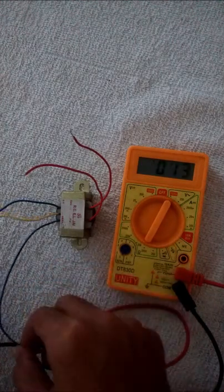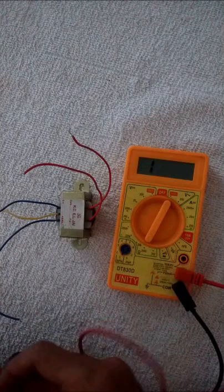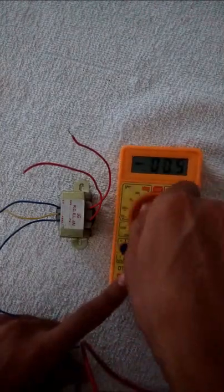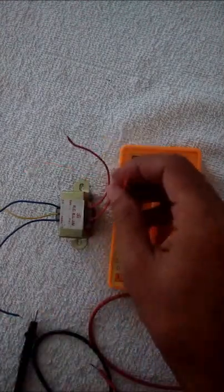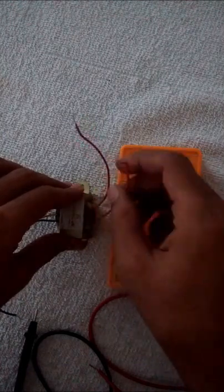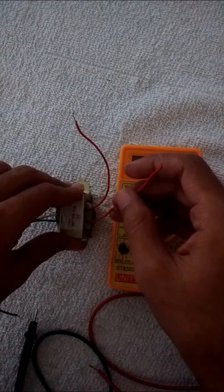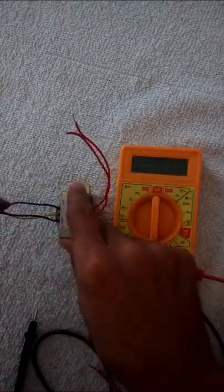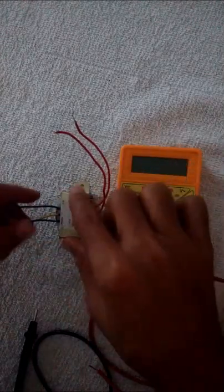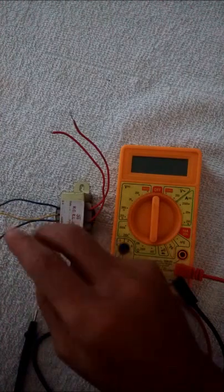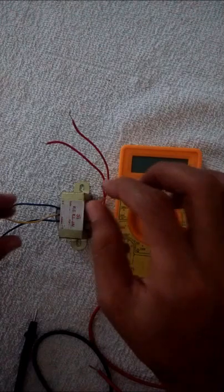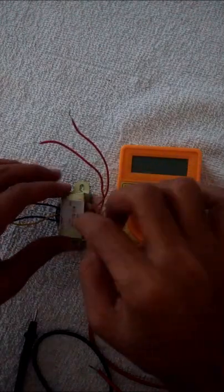Since the resistance of this side is greater, this one will be used as an input in case it is used as a step-down transformer, and this side will be used as output. We can also reverse it, meaning we can use it as input and this as output, but remember the voltage range mentioned for this transformer.